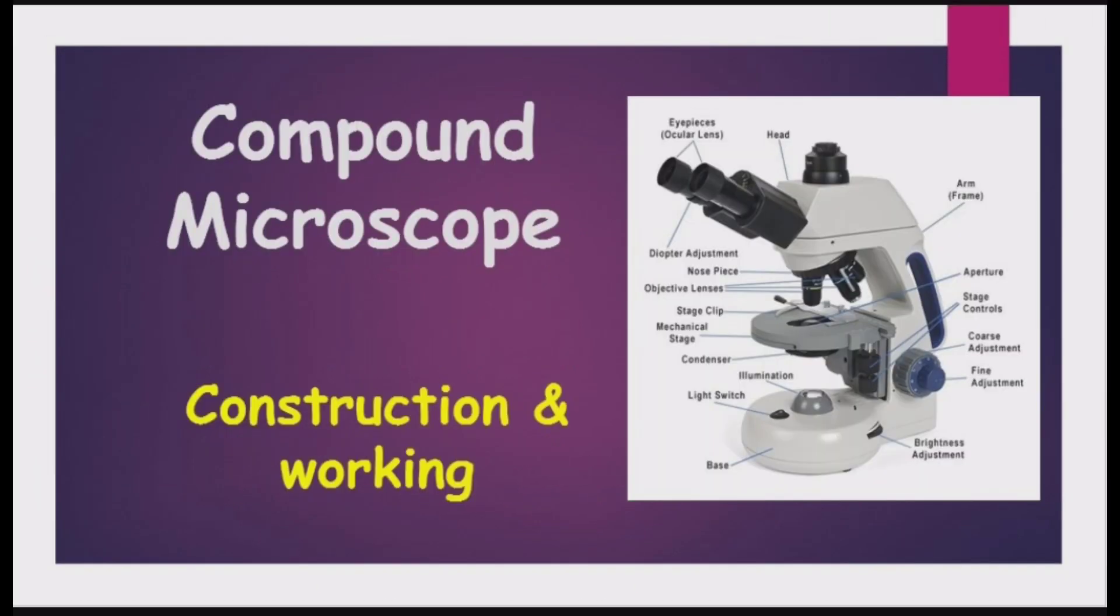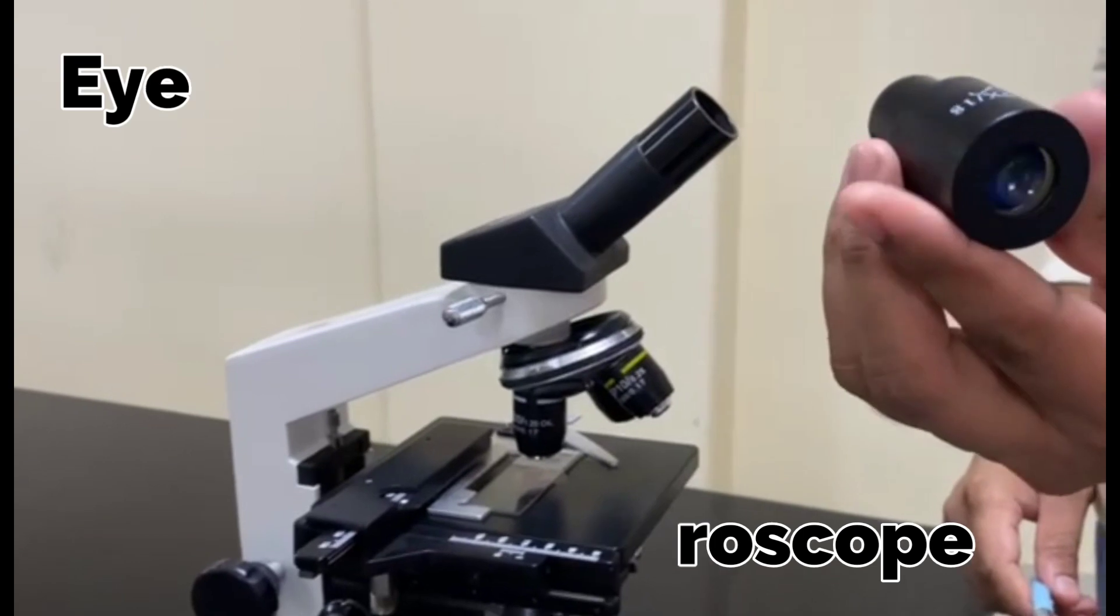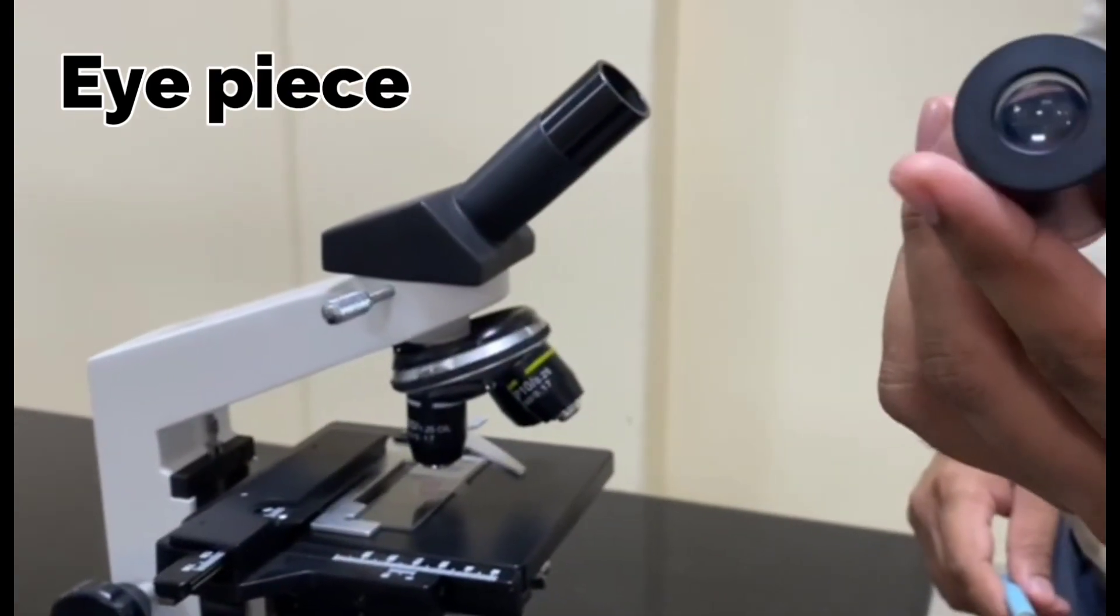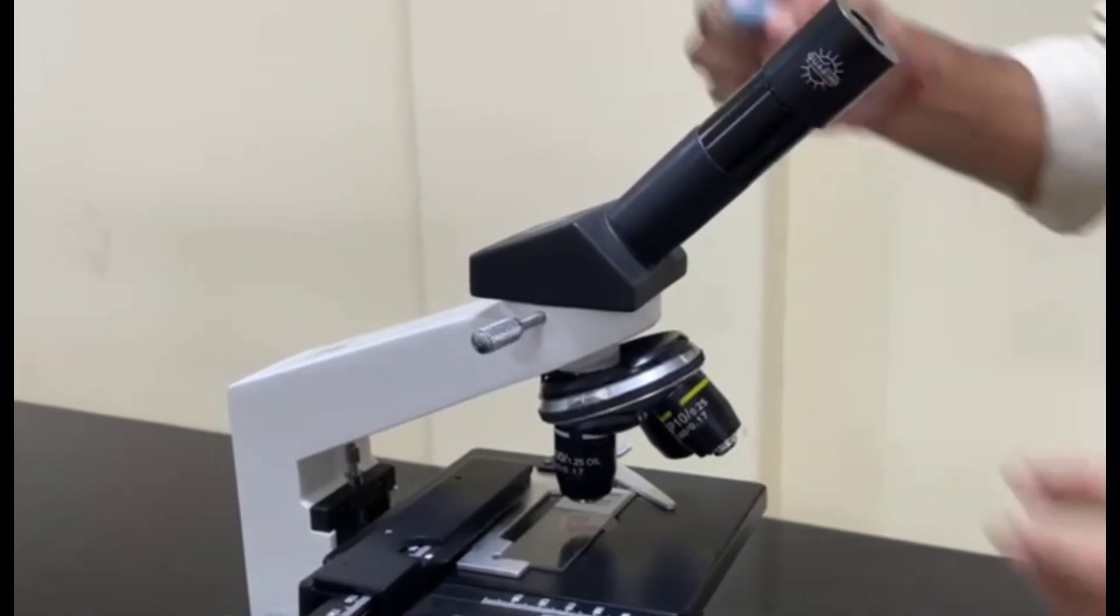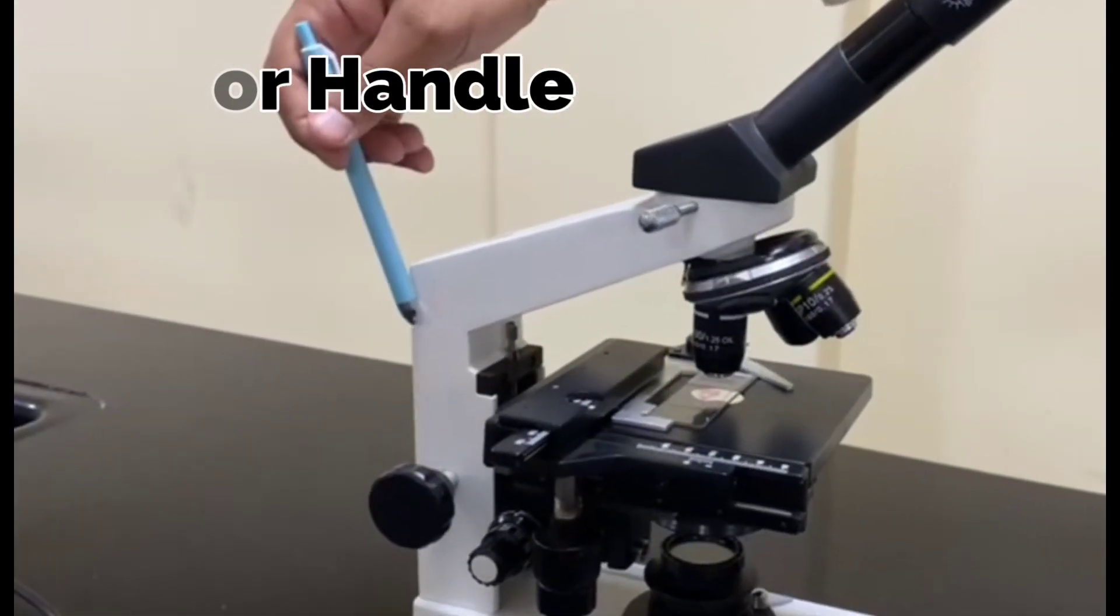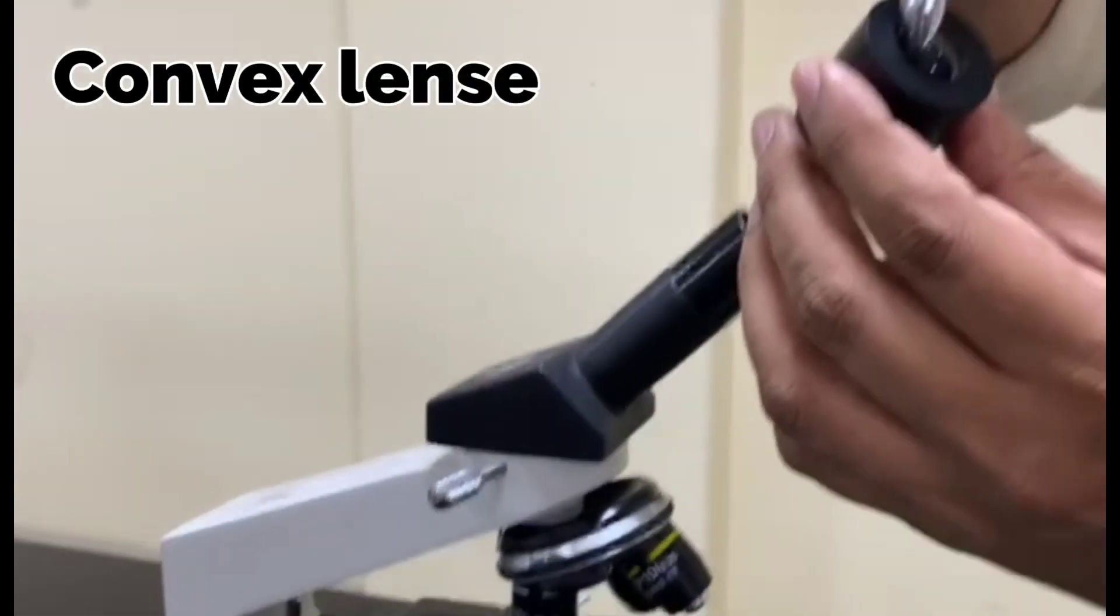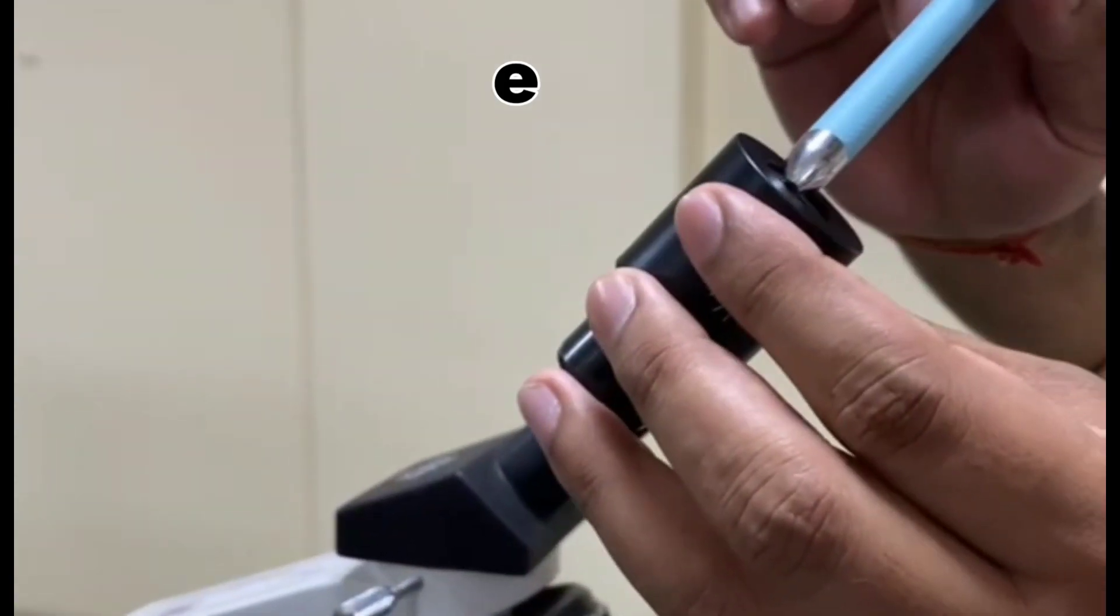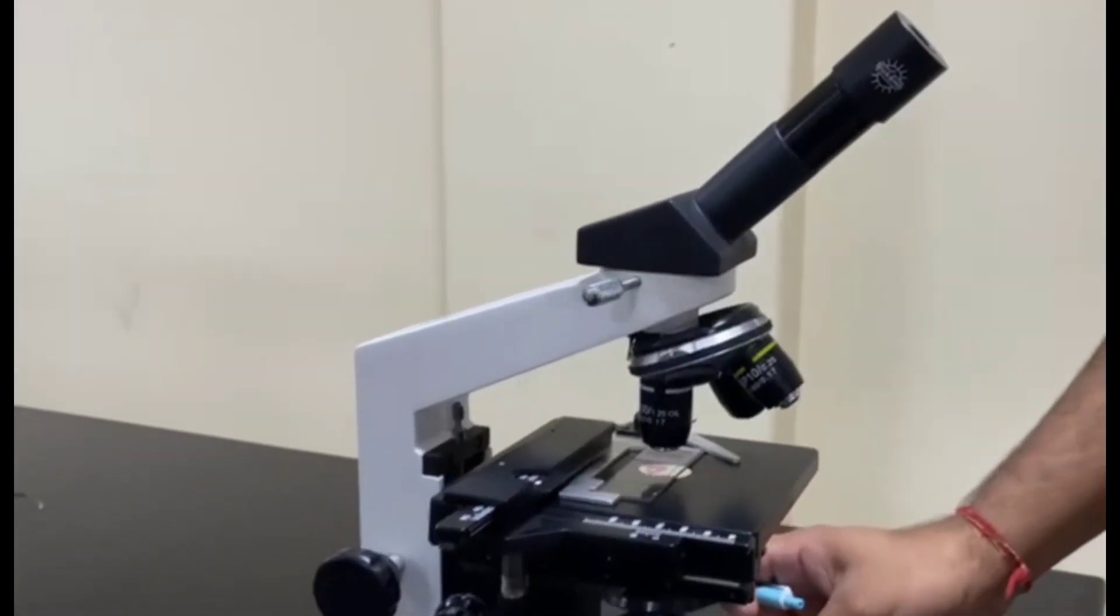Today we'll see about the compound microscope. This is the eyepiece. This fits here as you can see, and this is the arm or handle of the compound microscope. This eyepiece, if we talk about it, you can see this is a bi-convex lens and the power of this lens is 10x.